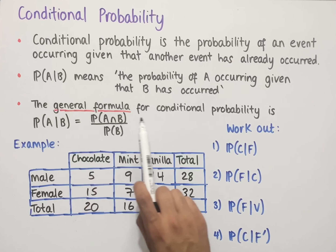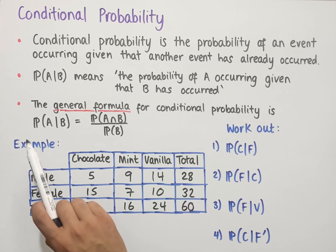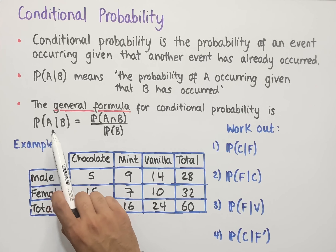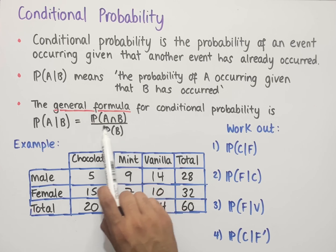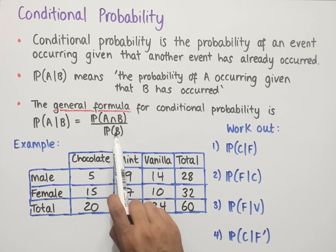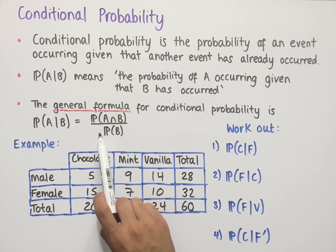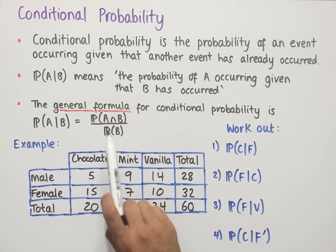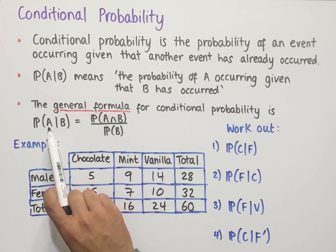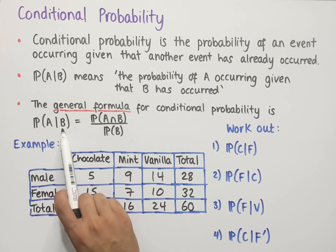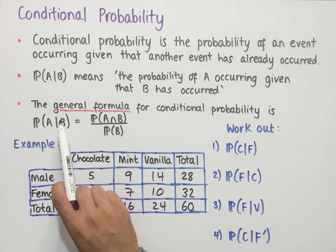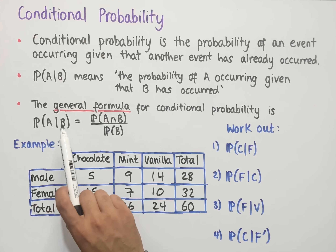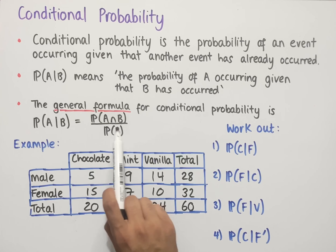The general formula for conditional probability is: the probability of A given B equals the probability of A intersect B divided by the probability of B. It's important that the probability of B is in the denominator. B is determined by the second letter in the conditional probability notation — whatever letter appears after the given line, its probability goes in the denominator.